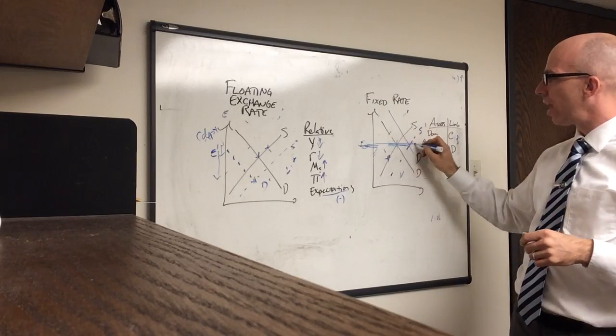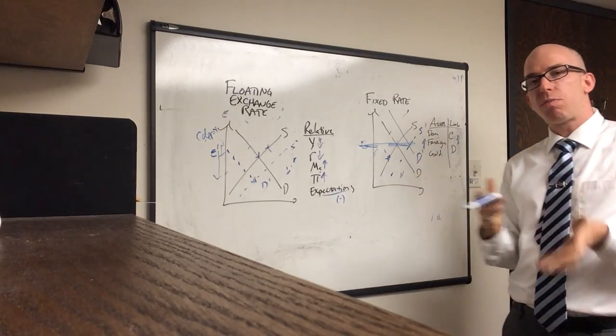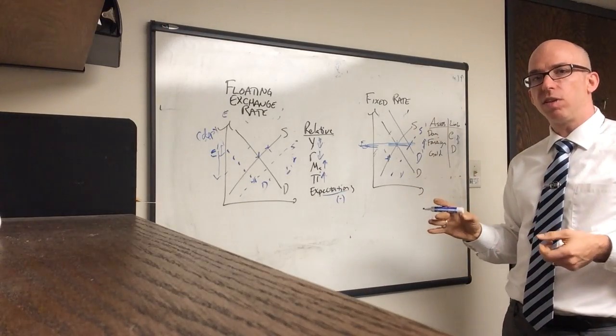You can buy foreign assets and print money or create money or increase the money supply. So the fixed exchange rate is determined by the bank, and that rate is set. Sometimes it's changed periodically, but it's set by the central bank, and it is defended through the purchasing and sales of reserves.